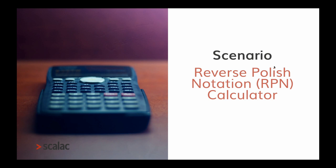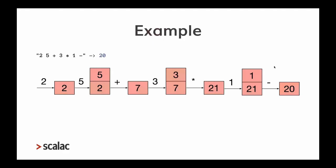An RPN calculator uses arithmetic expressions where numbers are written before the operations applied to them. The algorithm is simple: every time I receive a number I push it onto a stack. When I receive an operator, I pop the relevant numbers, apply the operation, and push the result back. That final result is the answer.